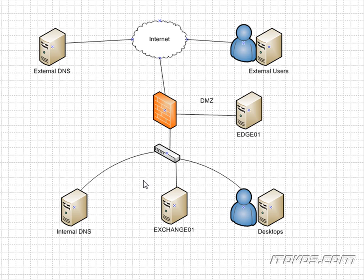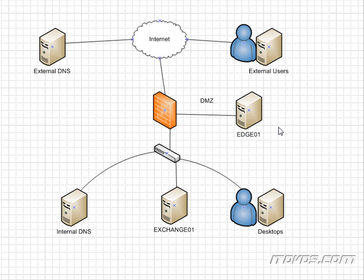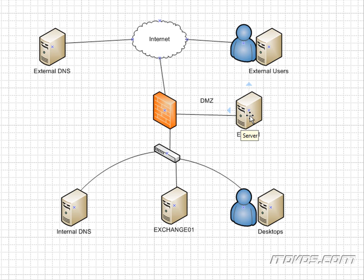Let's look at a diagram of a very common Exchange layout. Inside our internal network, behind our firewall, we have our Exchange server housing the mailbox role, the client access server role, and the hub transport role. In the perimeter network or DMZ, we have our edge transport server. When a user outside sends an email to our organization, it goes through the firewall into the DMZ to the edge transport server, which handles spam filtering, virus checking, and user validation. If everything checks out, it sends the email to the hub transport server role, which then routes it to the correct mailbox server.